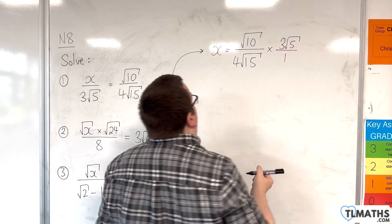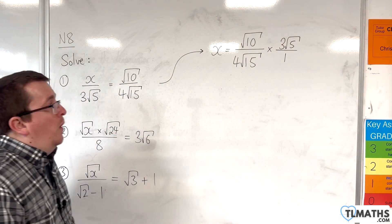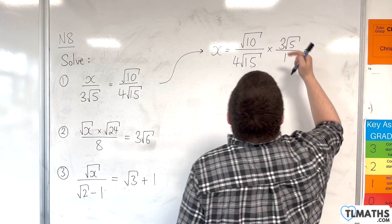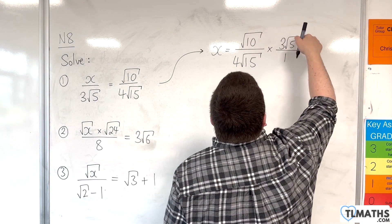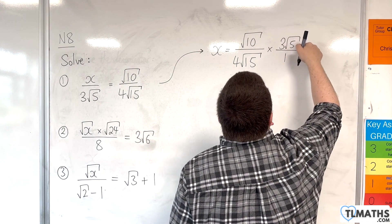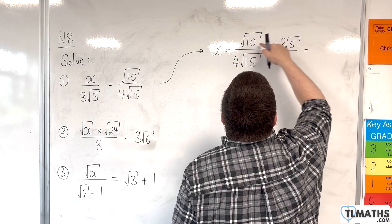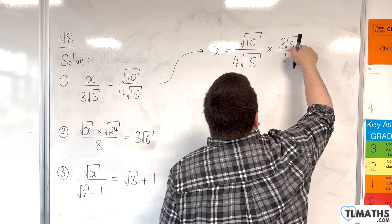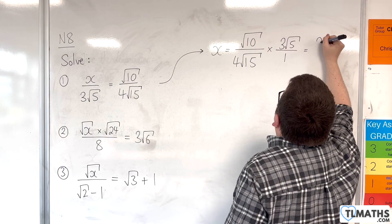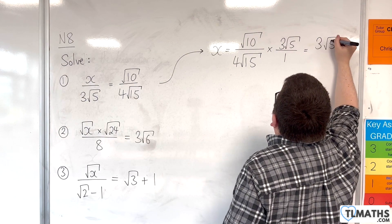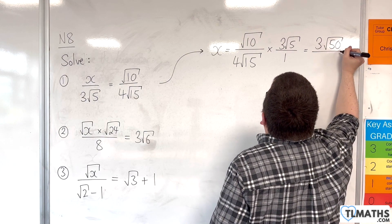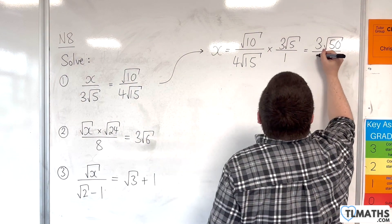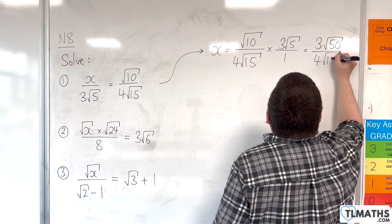I'm just going to write that as 3√5 over 1. The numerator is going to be √10 times 3√5, and √10 times √5 is going to be √50, so this will be 3√50 in the numerator. And the denominator, we've got 4√15 times 1, so just 4√15.